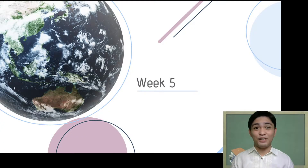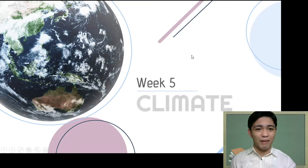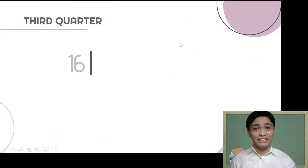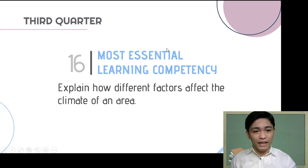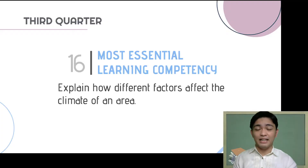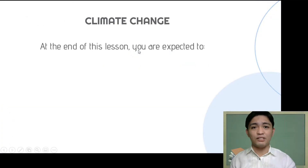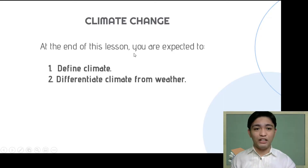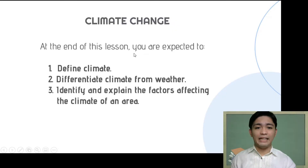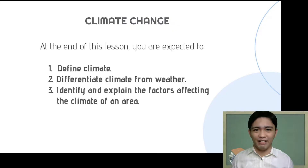Hi, kamusta? This is your Eman, a public school science teacher. In this video, we will discuss about climate. This is based on the 16th most essential learning competency in Science 9, which is to explain how different factors affect the climate of an area. At the end of this lesson, you are expected to define climate, differentiate climate from weather, and identify and explain the factors affecting the climate of an area.